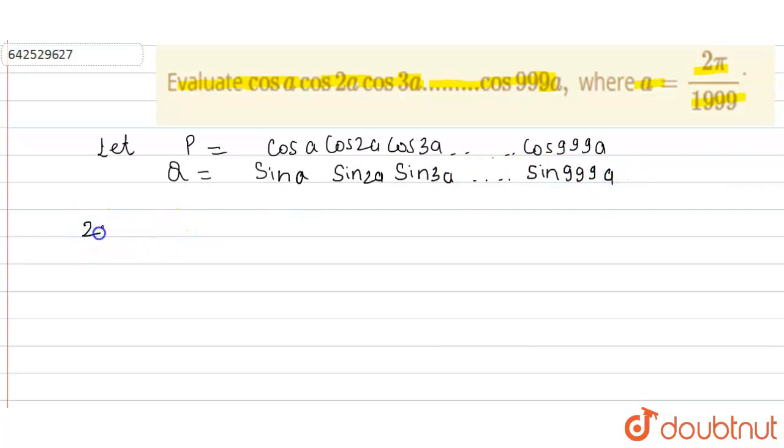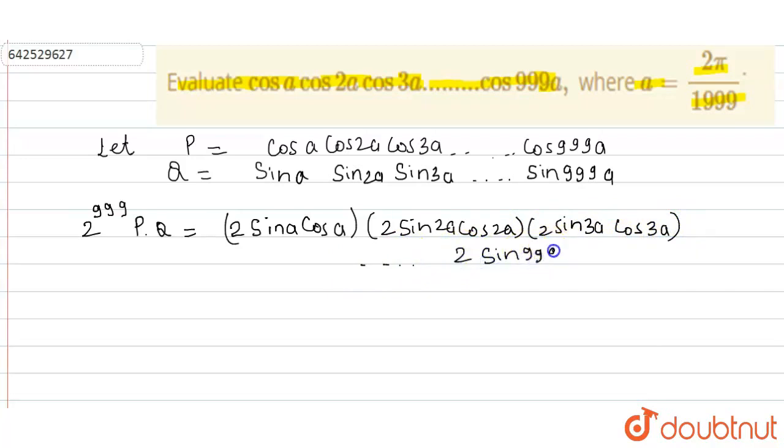We multiply by 2^999, so 2^999 PQ equals 2 sin a cos a times 2 sin 2a cos 2a times 2 sin 3a cos 3a up to 2 sin 999a cos 999a. That's why we multiplied by 2^999.